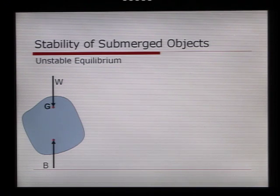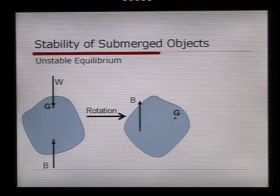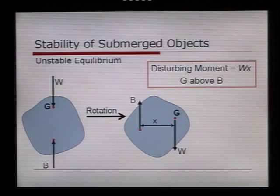Unstable equilibrium is the third type, where you have the centre of buoyancy below the centre of gravity. If we turn it in this situation, it's perfectly stable. However, if you were to turn it by even the smallest of angles, this would create a moment that would turn it further away from its original position. This is a disturbing moment, and it's calculated by multiplying W times the distance between the two, X. And this happens when the centre of gravity is above the centre of buoyancy, B.